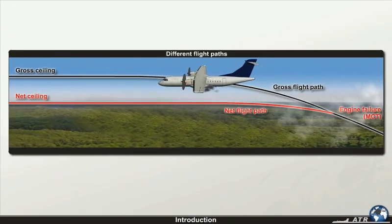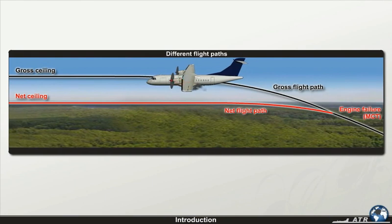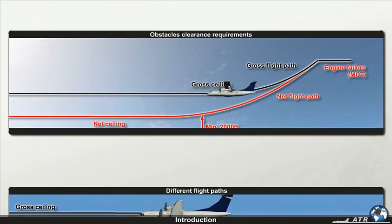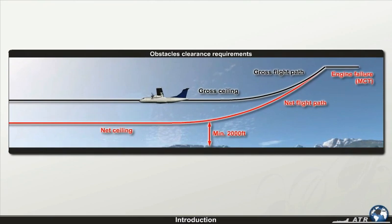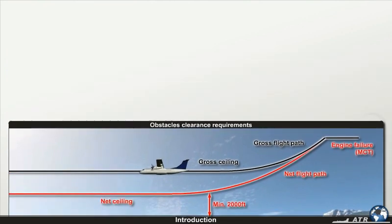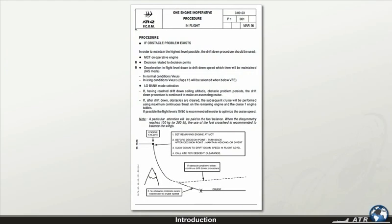We'll start with an explanation of the different flight paths and then find out about the obstacle clearance requirements. Finally, we'll look at the in-flight procedures for one-engine-out performance.